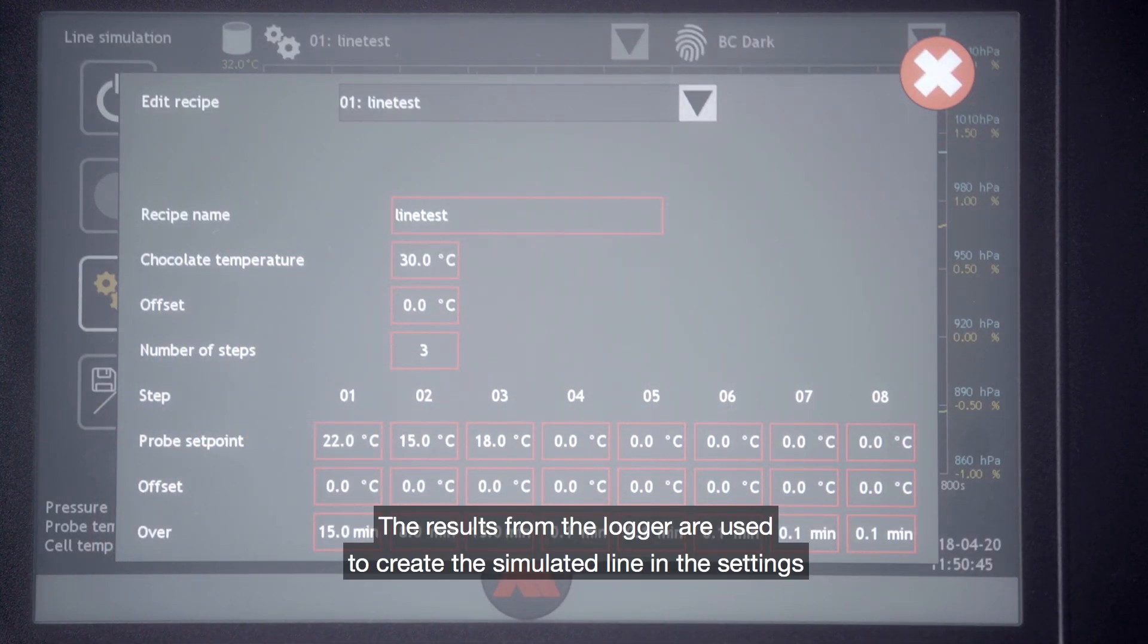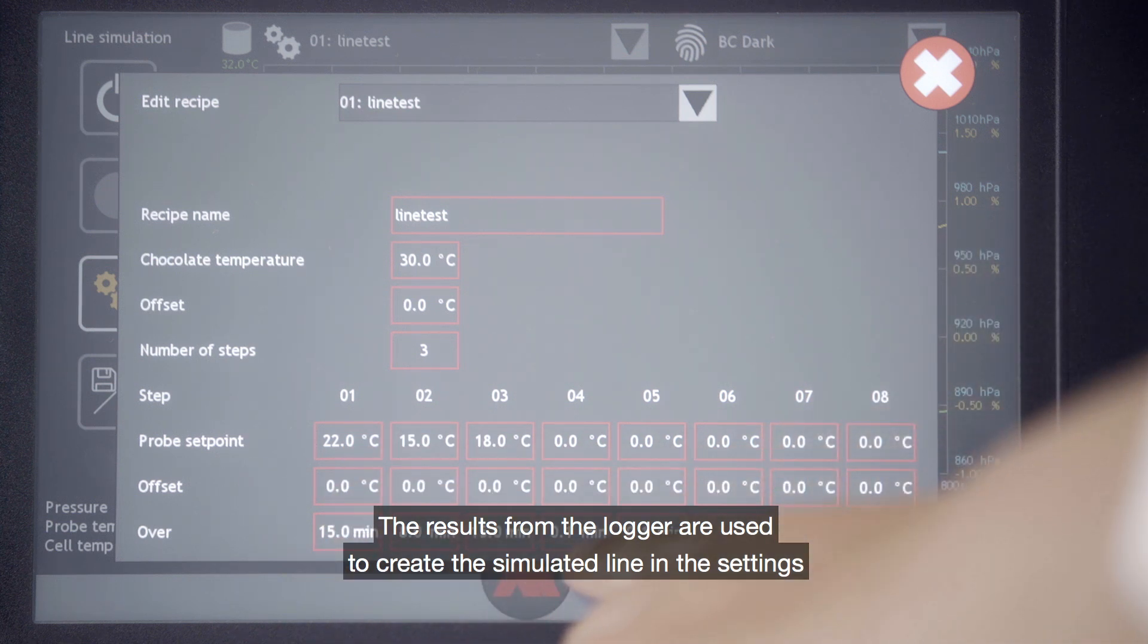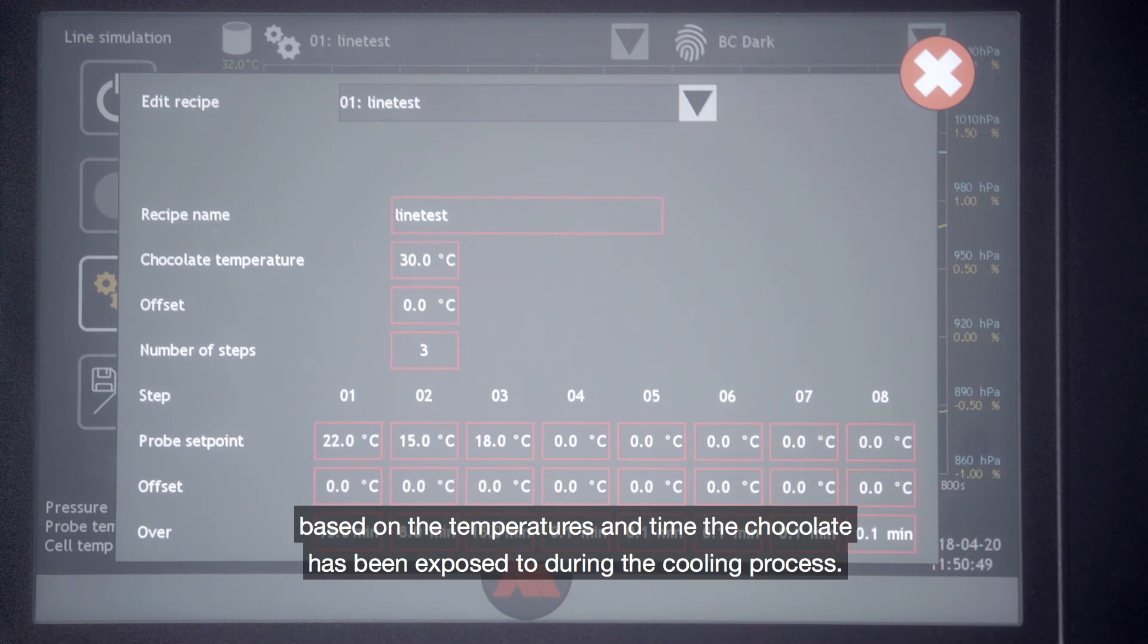The results from the logger are used to create the simulated line in the settings based on the temperatures and time the chocolate has been exposed to during the cooling process.